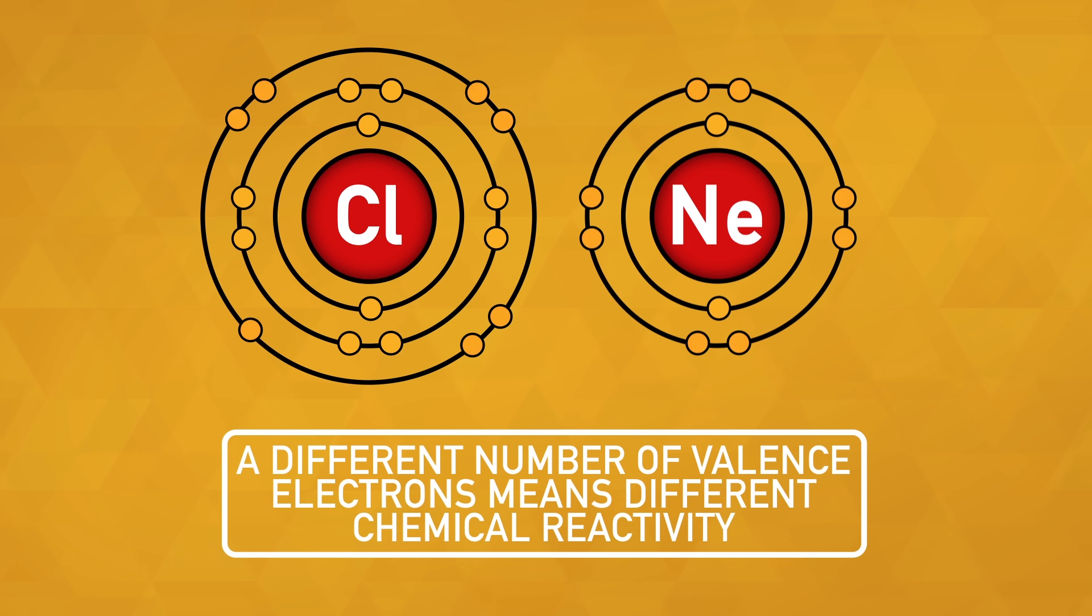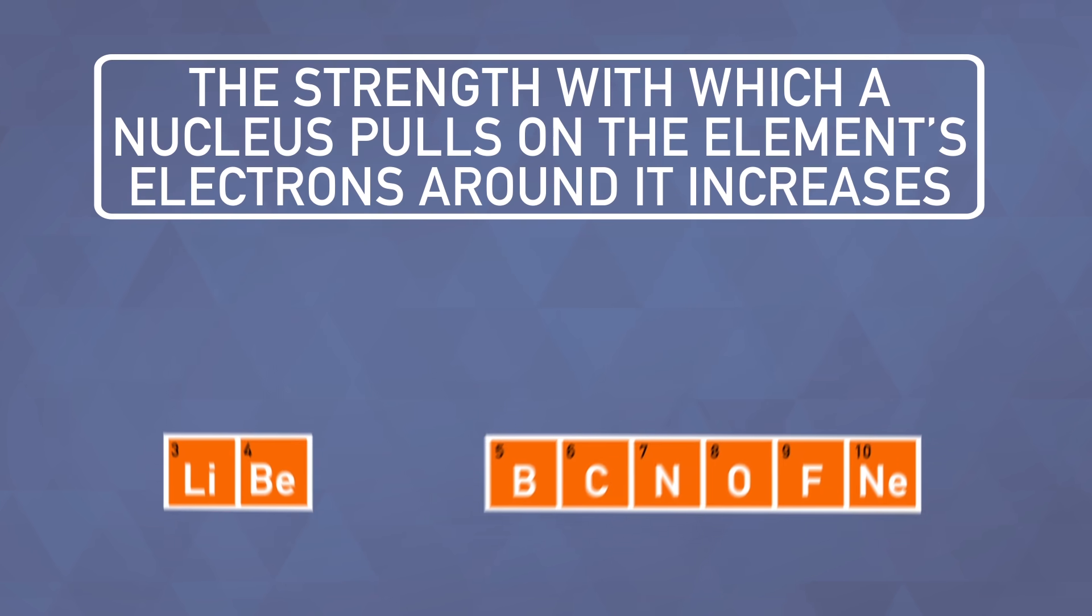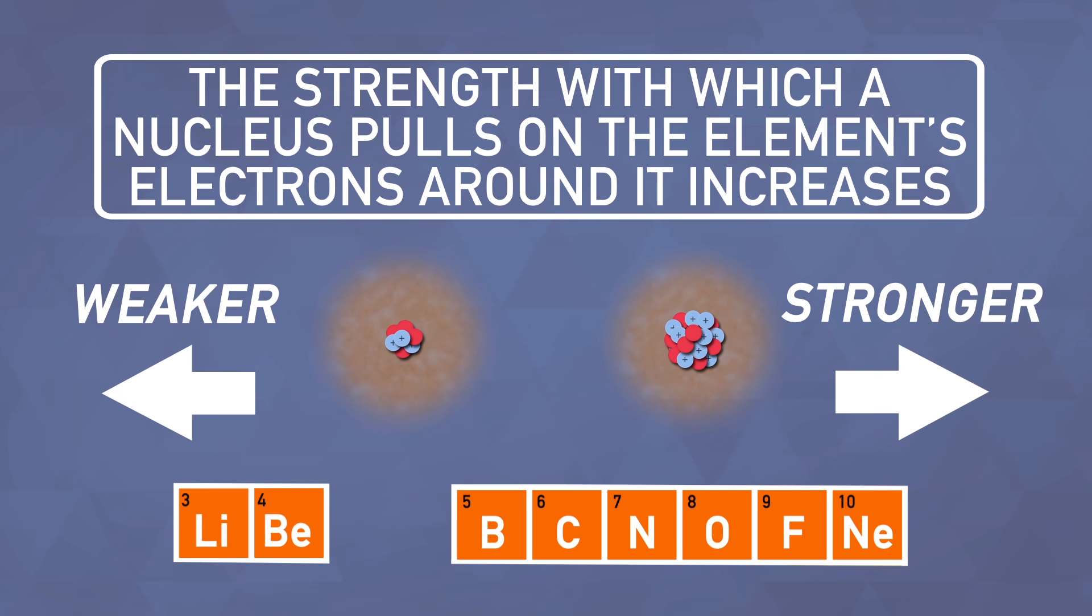Remember, a different number of valence electrons means a different chemical reactivity. For example, as we move across the second period, the strength with which an element's nucleus pulls on the element's electrons around it increases.